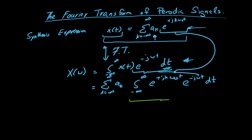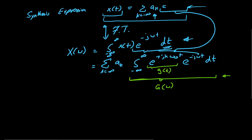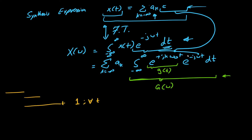This inner integral is again a Fourier transform of a function — let us call it g(t) — so this part becomes G(ω). To develop intuition for G(ω), consider a signal in the time domain that is simply 1 for all values of t. The Fourier transform of this constant signal is 2π δ(ω), an impulse at zero with value 2π.